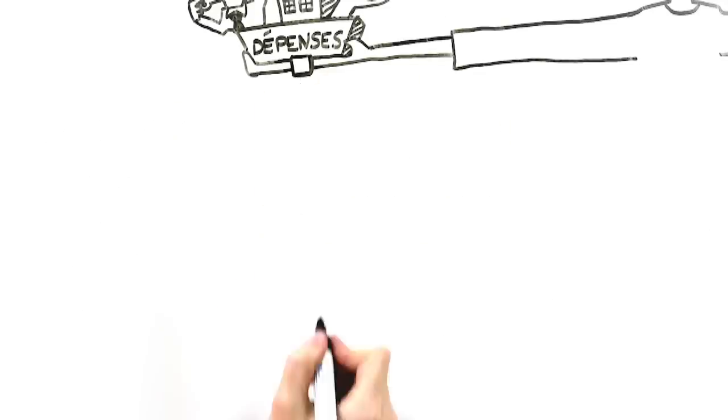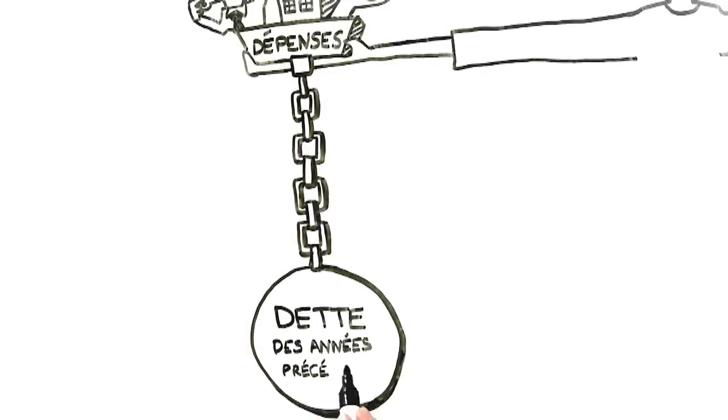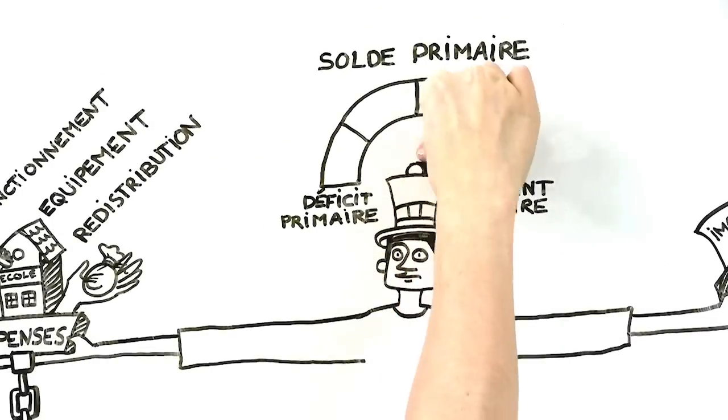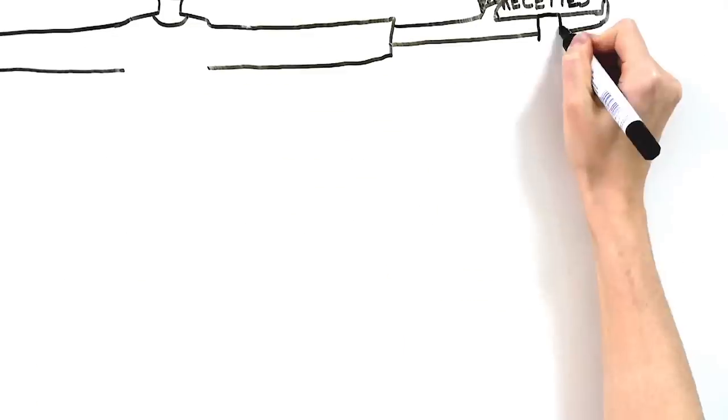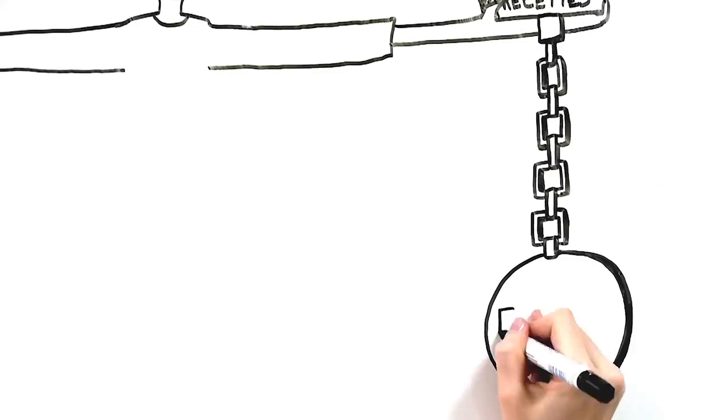A country must also deduct from its primary balance the repayments on its debt. If a country is running a deficit, it must borrow money to continue functioning normally.